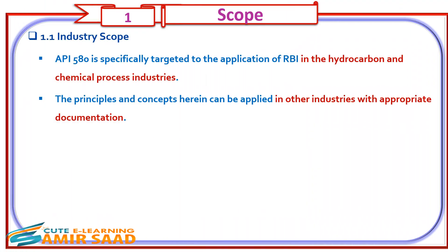1.1 Industry Scope. API 580 is specifically targeted to the application of RBI in the hydrocarbon and chemical process industries. The principles and concepts herein can be applied in other industries with appropriate documentation.